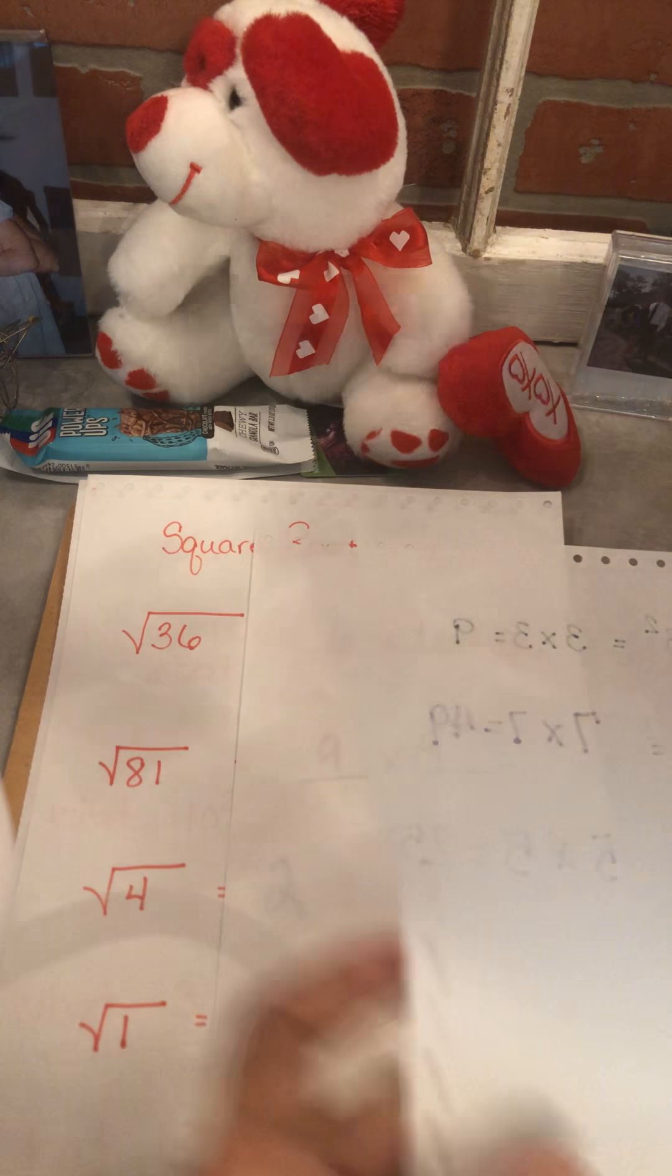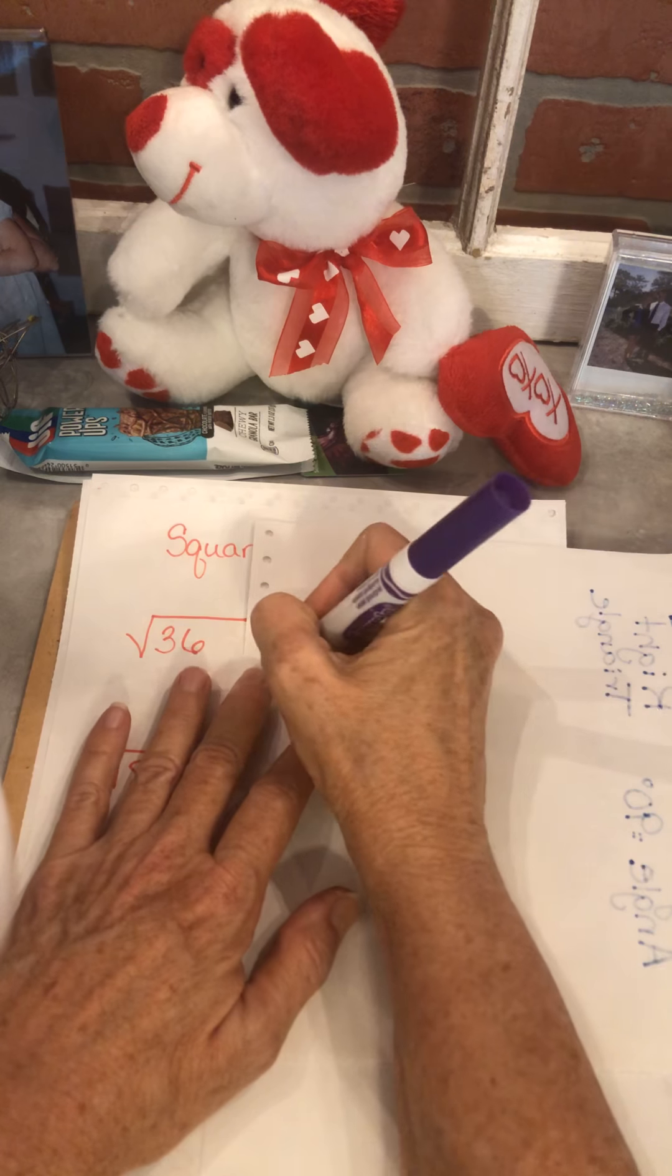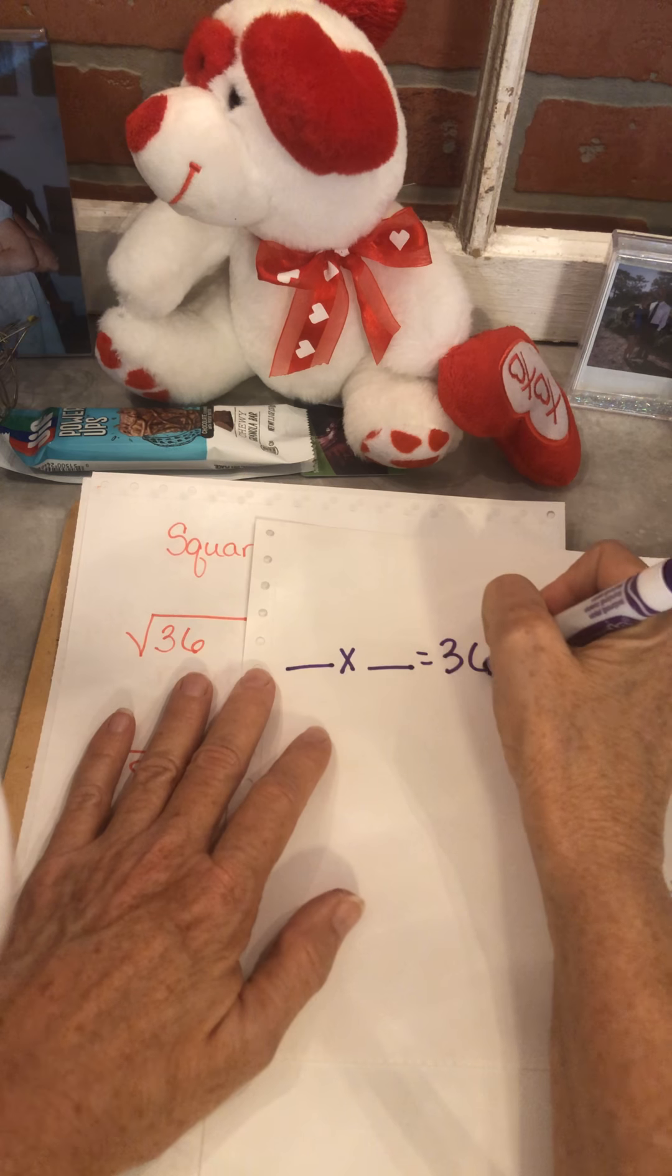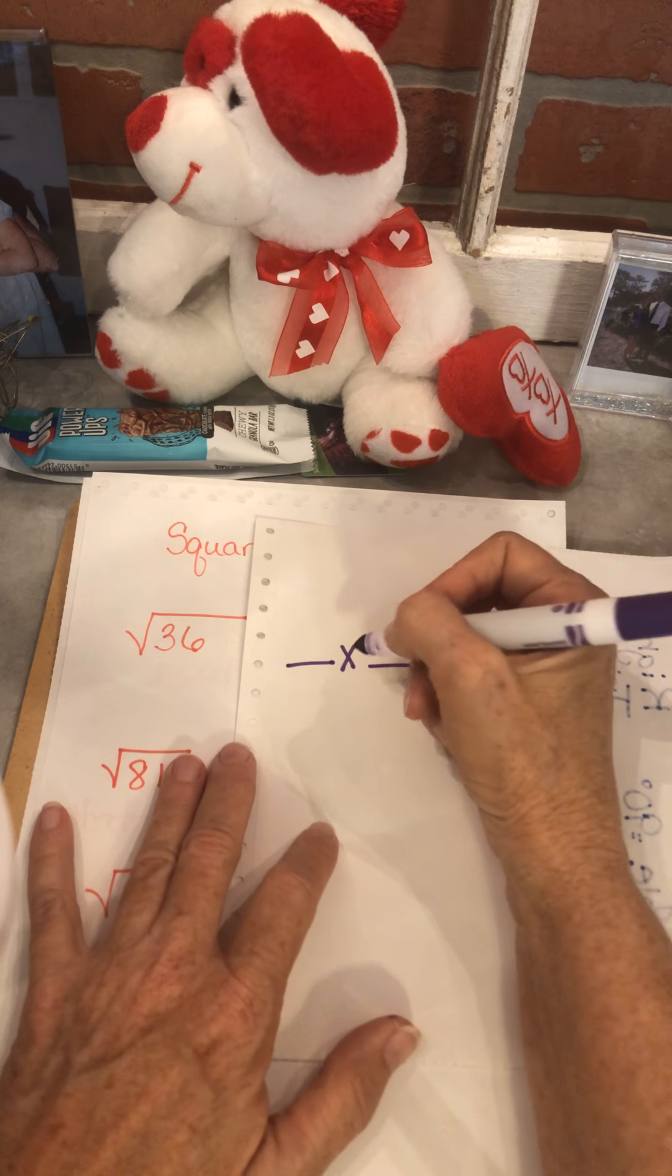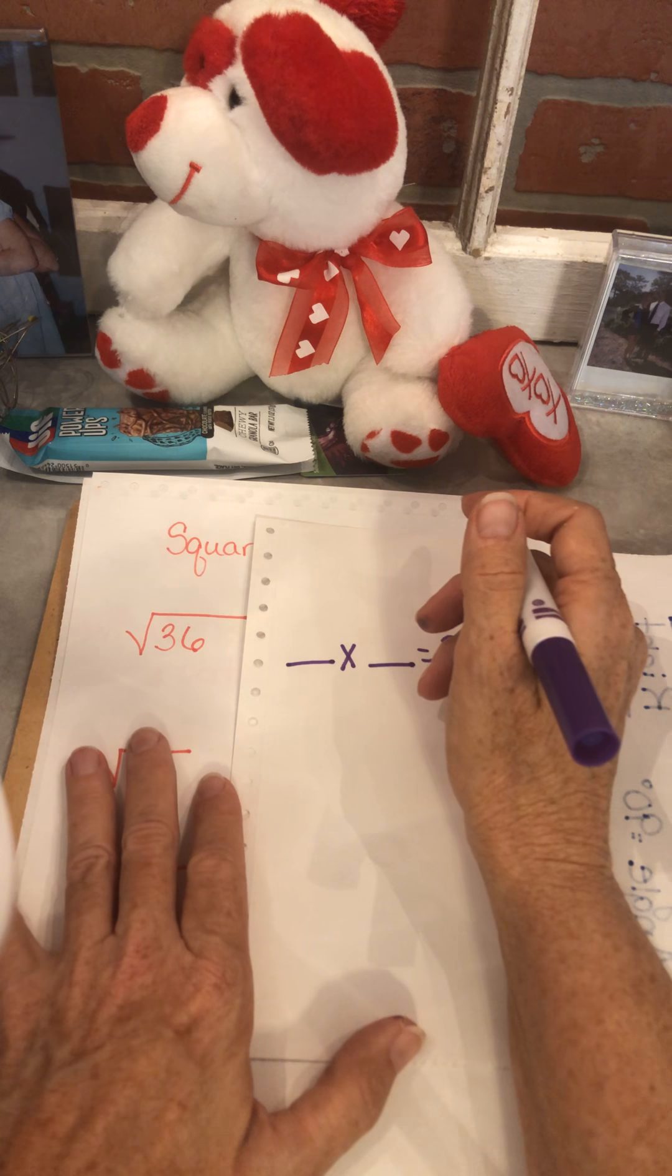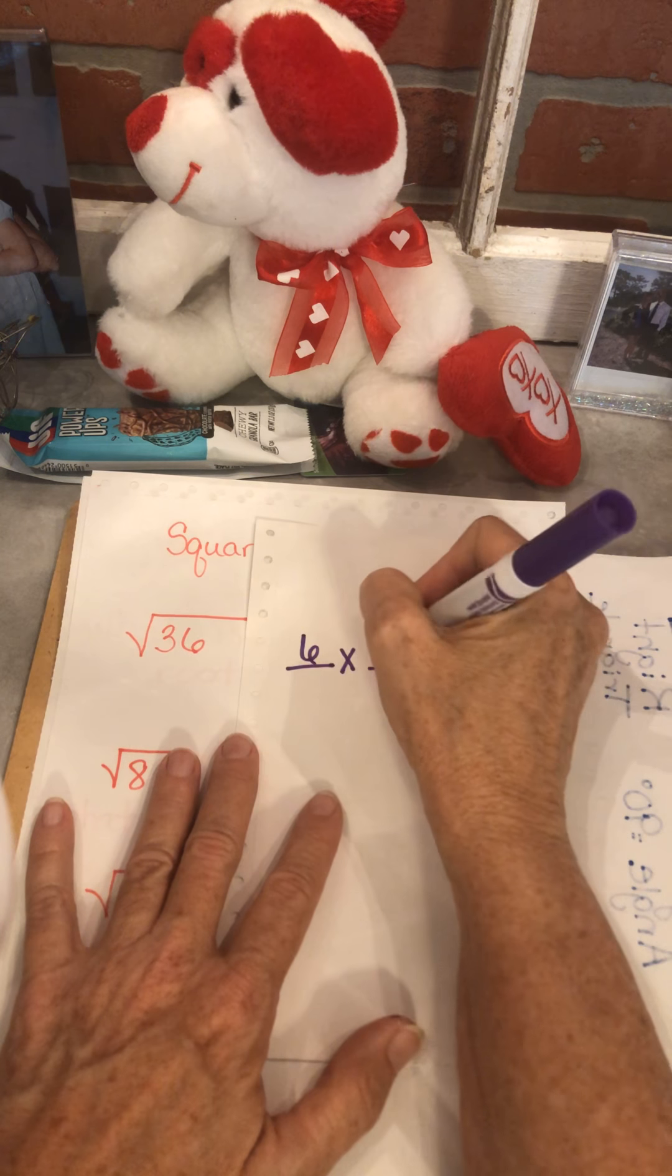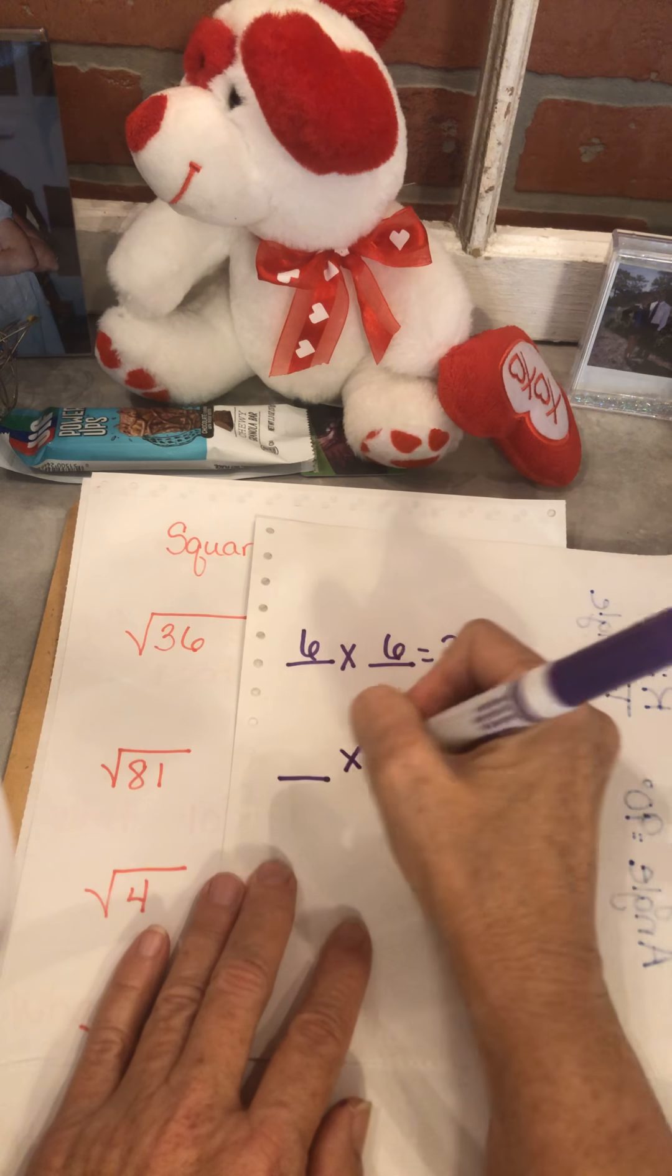Now we're gonna do the square root of 36. So this is doing the opposite. This is thinking to yourself, what times what gives me 36 where the numbers are exactly the same? So if you know your perfect squares, this will be easy for you. One times one is one, two times two is four, three times three is nine, four times four is 16, five times five is 25, and six times six is 36.